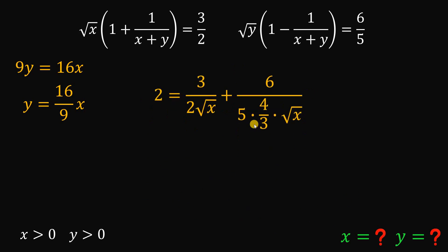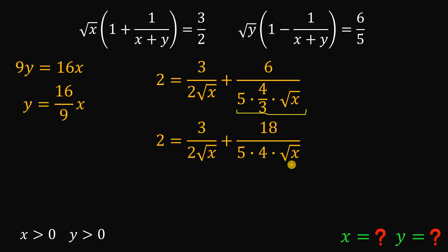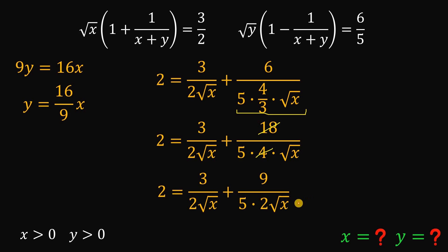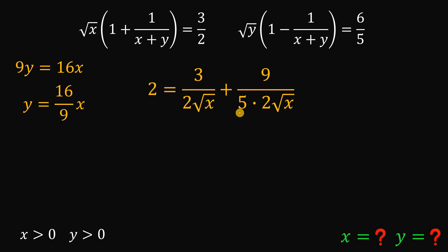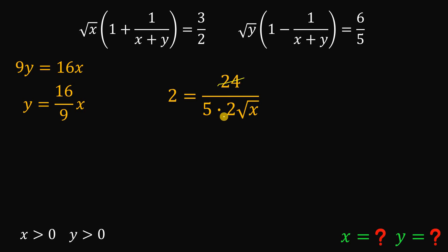Focusing on this result, we multiply the second term by 3 over 3, giving 18 over 5 times 4 over 3 times square root of x, which simplifies to 8 over 5 times square root of x. To combine fractions, we multiply the first term by 5 over 5 to get a common denominator. Combining gives us (15 plus 9) over 10 times square root of x, and simplifying 24 over 10 gives 12 over 5 times square root of x.